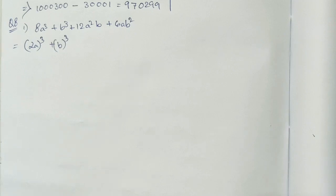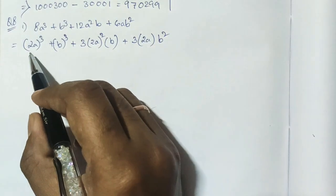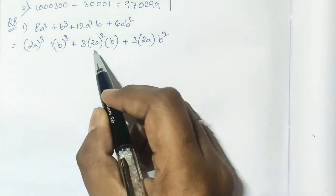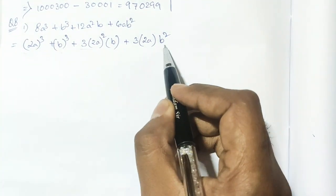Obviously this will be a plus b whole cube. Let's just check it by putting as per the identity. We can see that yes, we are getting the same 12 a square b. So yes, our question actually is solved here itself.